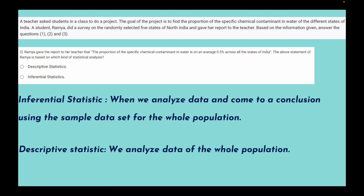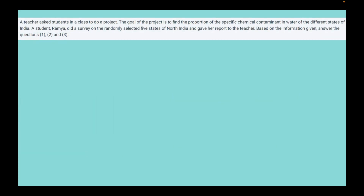Here, Ramya reported that the proportion of the specific chemical contaminant is on average 0.5% across all the states of India, but we know she only surveyed five randomly selected states of North India. Since she is drawing a conclusion about the entire population from a sample, the correct answer is inferential statistics.